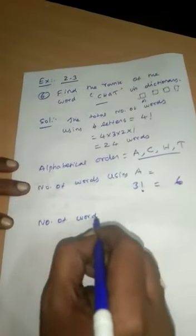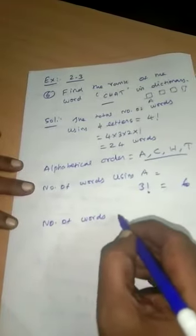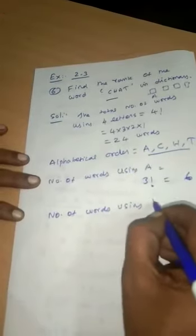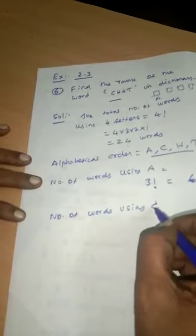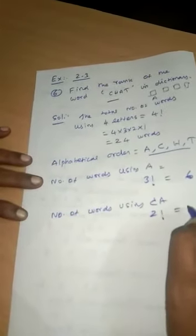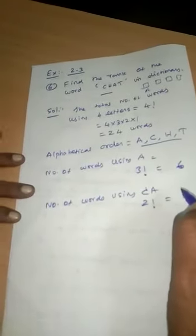Next is number of words starting with C. In the dictionary consecutively, C is next, then A also comes. Therefore two letters C and A are filled, remaining two letters, therefore two factorial, that is two into one equals two words we can form.